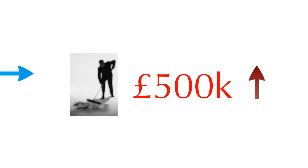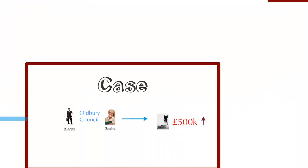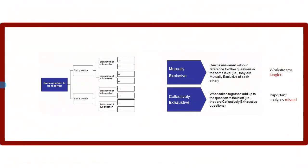Street cleaning's expenditure was £500,000 greater than expected last year. Martin and his team decide to build an Issue Tree to make sure they are accurately disaggregating the problem.